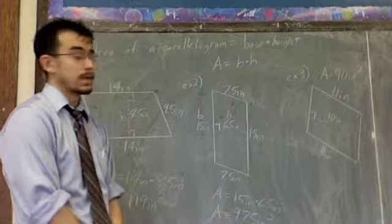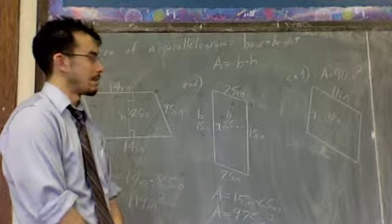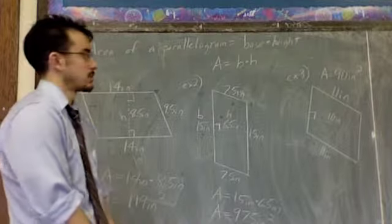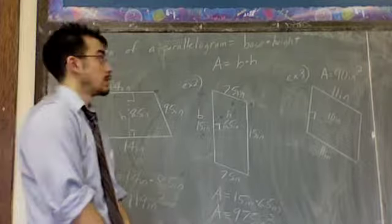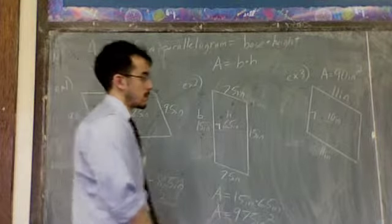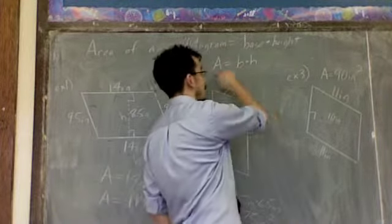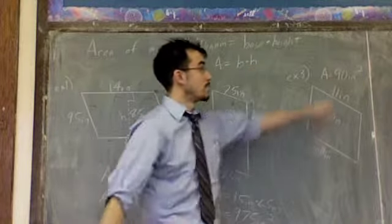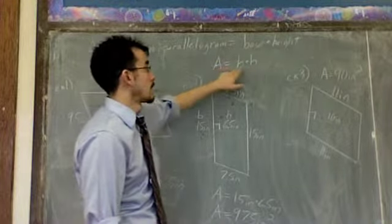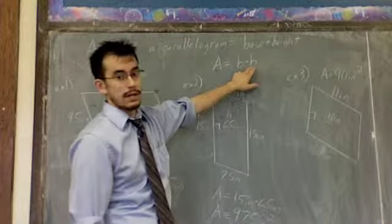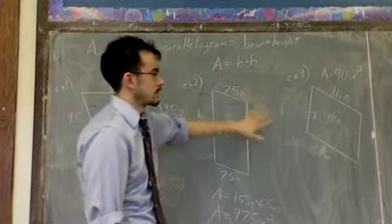The third problem, we have another parallelogram, but there's a catch. We're going to go backwards instead of forwards. You don't know the base and the height. You know the area. So in the area formula, if it says area equals base times height, and you know the area, well, you're going to put the 90 there. And you're going to know one of these numbers, and you're going to solve for the other one. Let's see what we know.